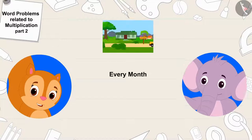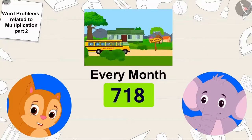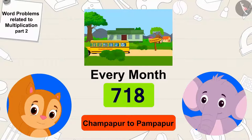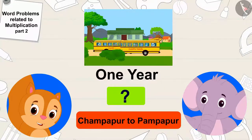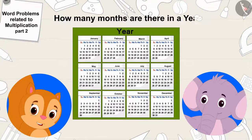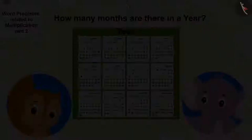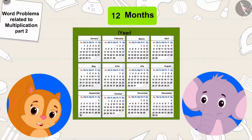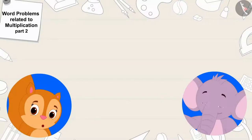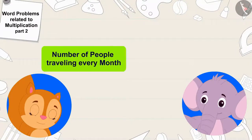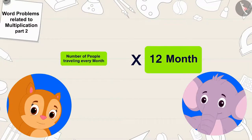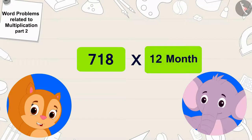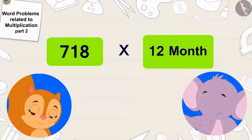Come, let me teach you how to find this out. Every month 718 people use our bus service to travel from Champapur to Pumpapor, and we have to find out how many people will travel by our bus service in a year. Appu, how many months are there in a year? Chanda asked. 12 months! Appu quickly replied. That's correct, so we have to multiply the number of people traveling every month by 12. We will multiply 718 by 12, Chanda told Appu.